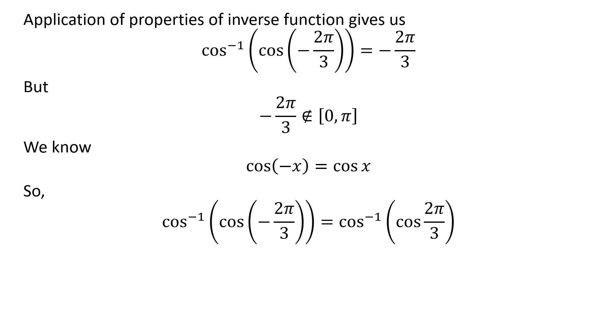Application of the above identity implies cos⁻¹(cos(-2π/3)) equals cos⁻¹(cos(2π/3)).